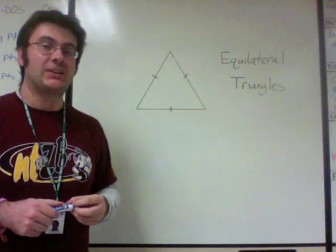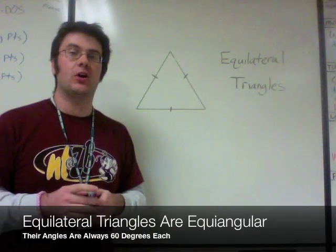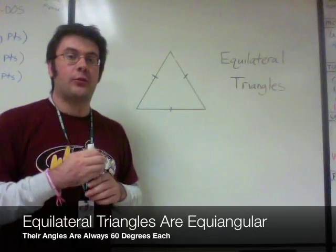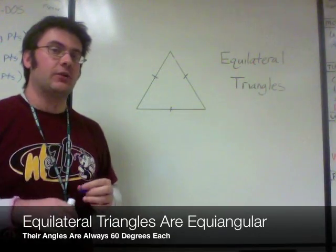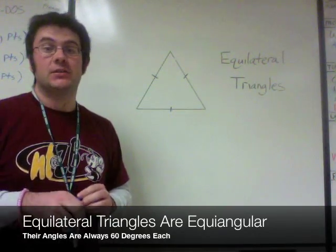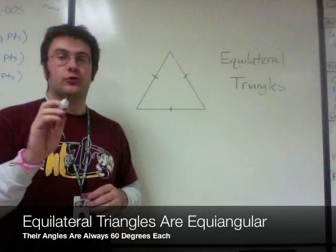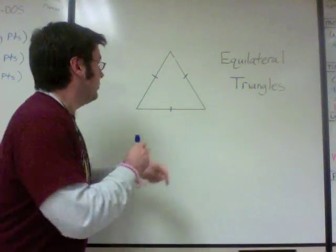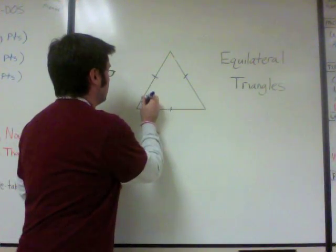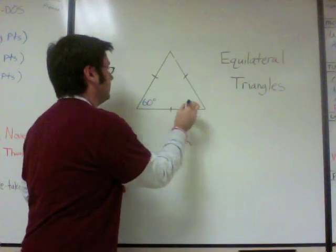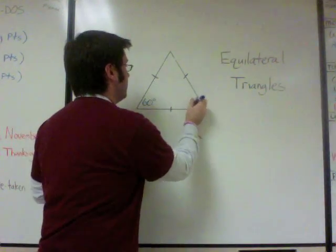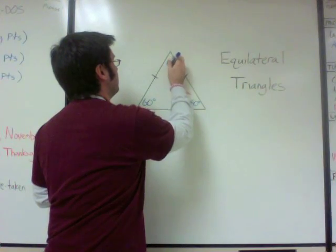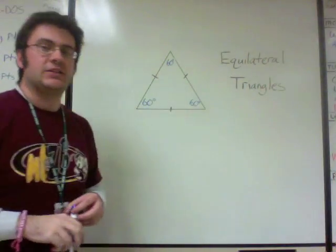One important fact about equilateral triangles: they are also equiangular. That means all three of their angles are the same measure. And in fact, in an equilateral triangle, that measure is 60 degrees. So let's write this in here — each angle in an equilateral triangle is 60 degrees.